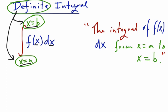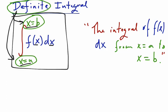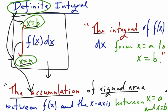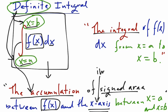The next really important thing is that this expression has meaning. The integral symbol means the accumulation of signed area between f of x, which is the function, and the x-axis. This is always implied whenever you're doing an integral. And we're going between x equals a and x equals b.